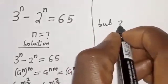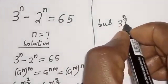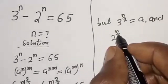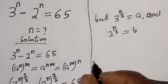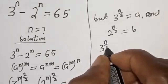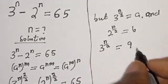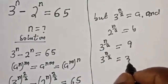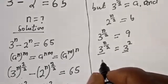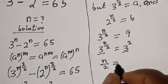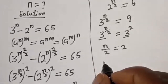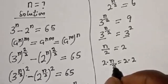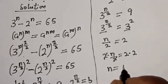Recall that 3 raised to power n over 2 is equal to a, and a equals 9. So 3 raised to power n over 2 equals 9, which is 3 squared. Using the same base rule, n over 2 equals 2. Multiplying both sides by 2, we get n equals 4. That is the value of n.